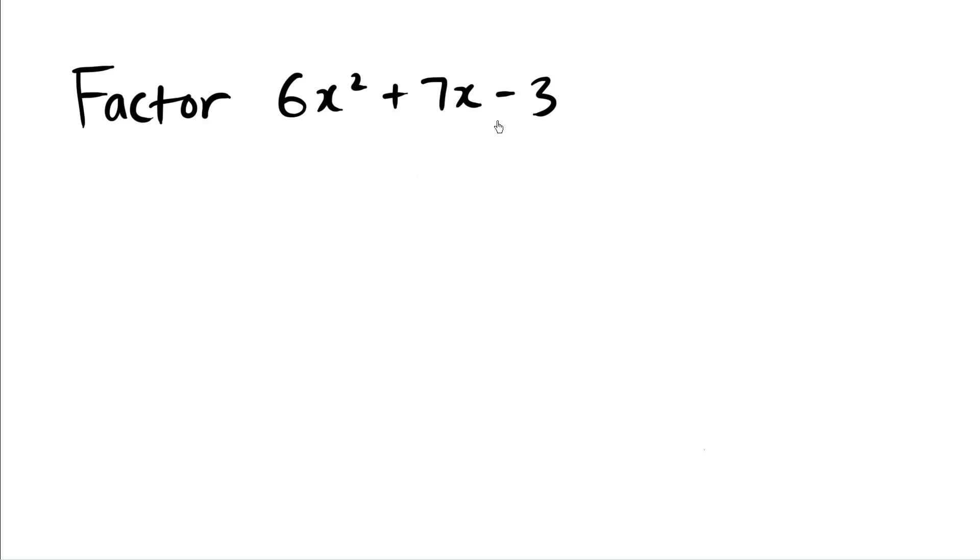We're going to copy the same quadratic down without the coefficient, x squared plus 7x, and we're going to multiply the first number with the last term here, which is 6 times negative 3 equals negative 18.